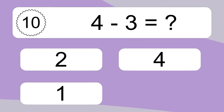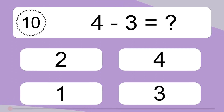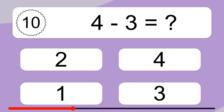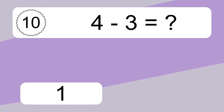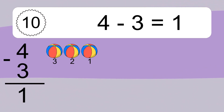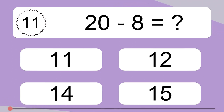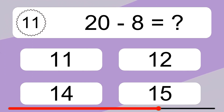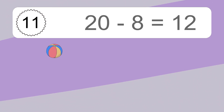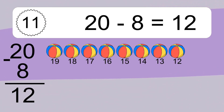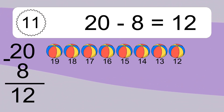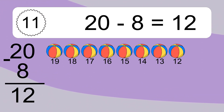4 minus 3 equals what? 4 minus 3 equals 1. Let's count it: 3, 2, 1. 20 minus 8 equals what? 20 minus 8 equals 12. Let's count it: 19, 18, 17, 16, 15, 14, 13, 12.